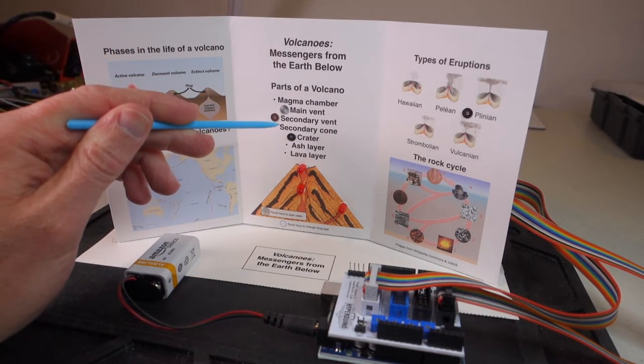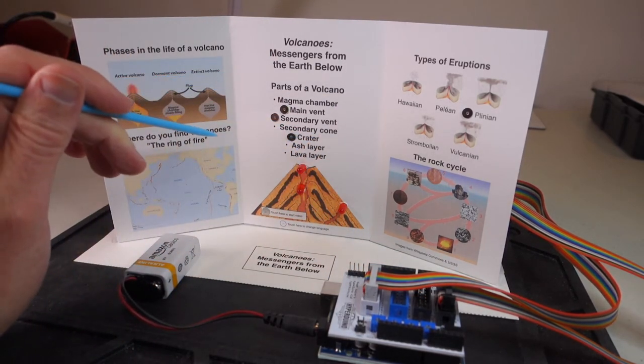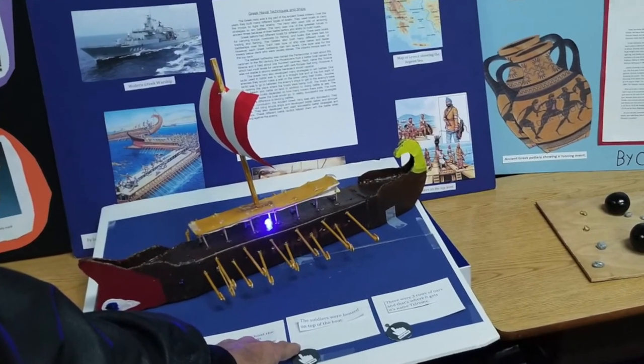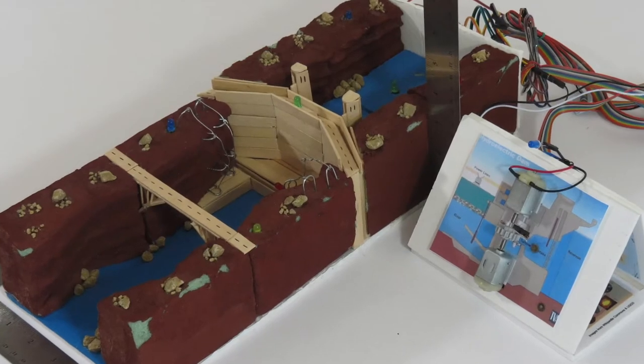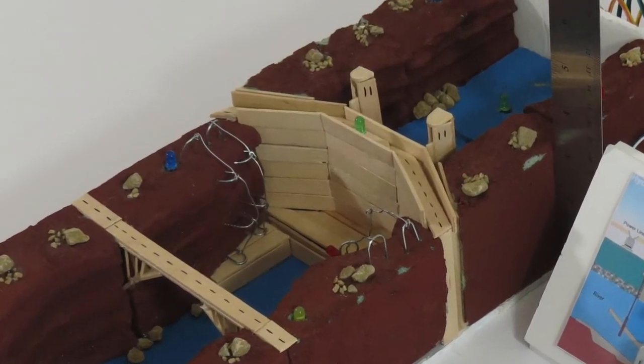So you can imagine creating a large poster board with your project or a large diorama or model, and then when you touch on various features, it'll light up an appropriate item on your diorama or your poster board.